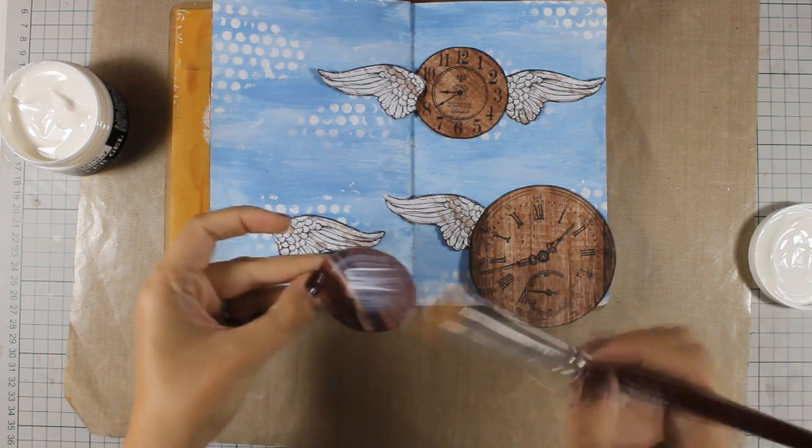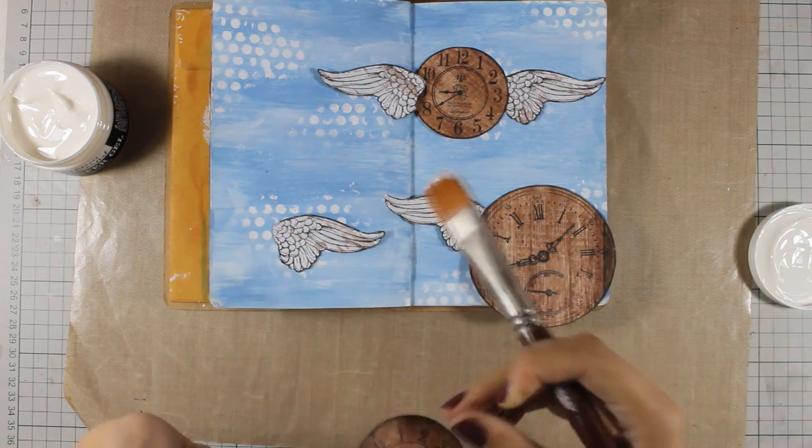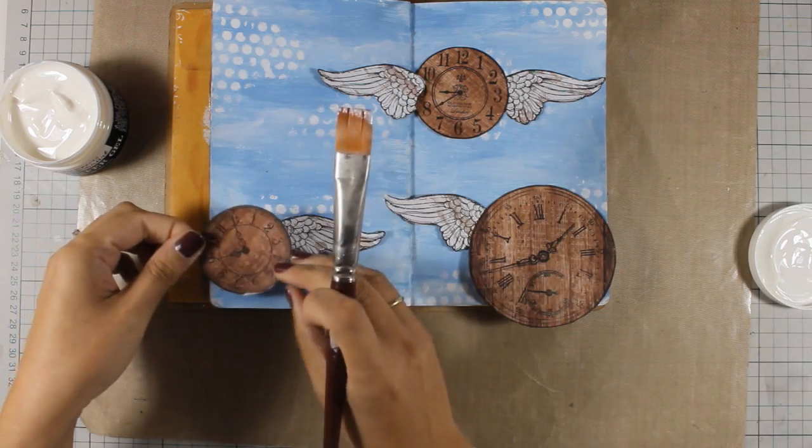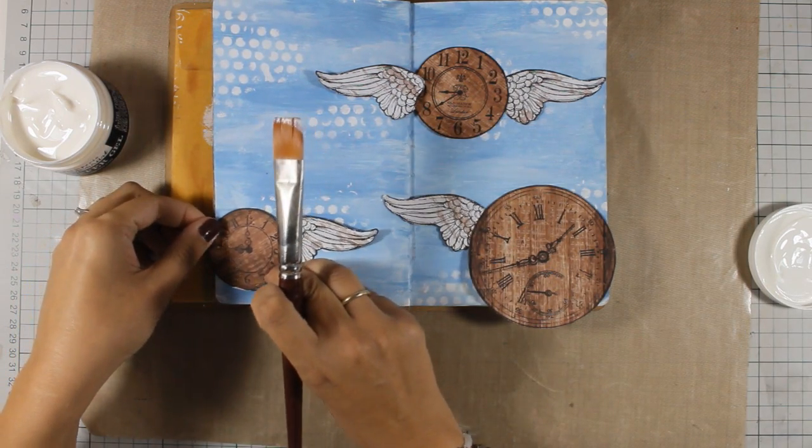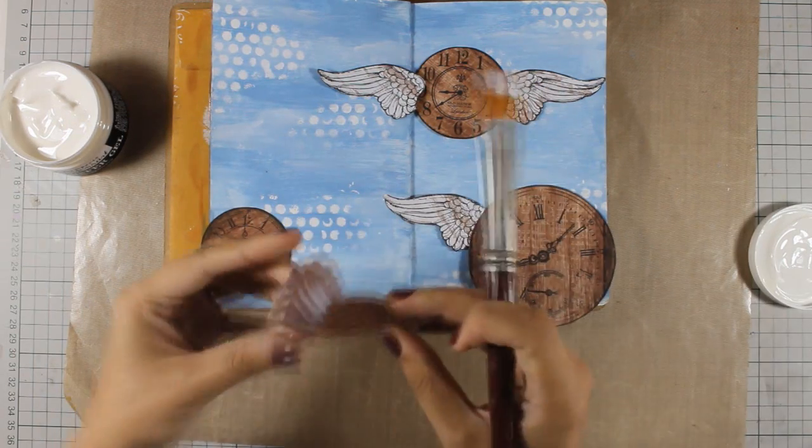I am going to use a transfer gel to stick everything down. Now of course you can use any type of glue and although this is made actually for transferring technique, I find that it works great for sticking down my collages and that's why I'm using it.